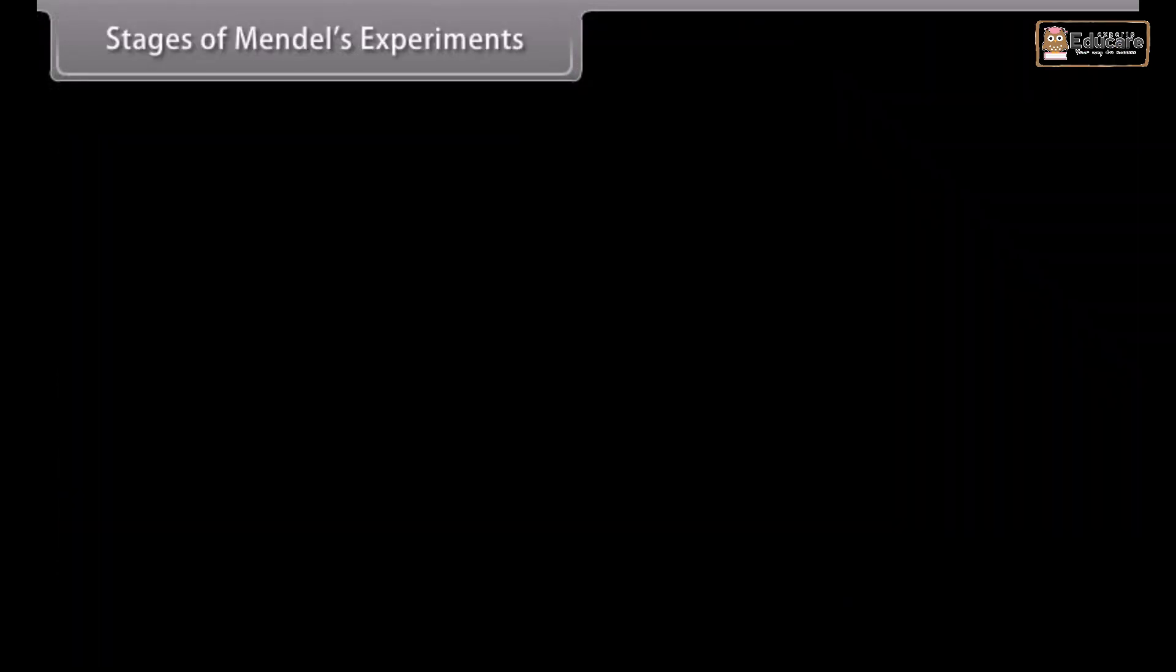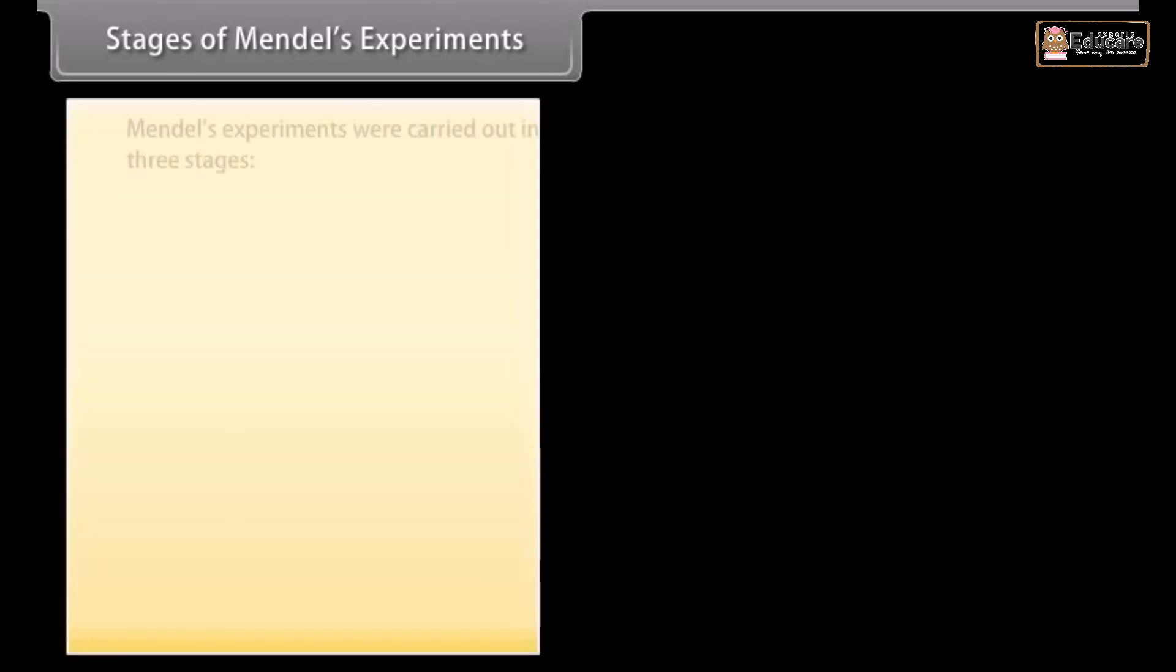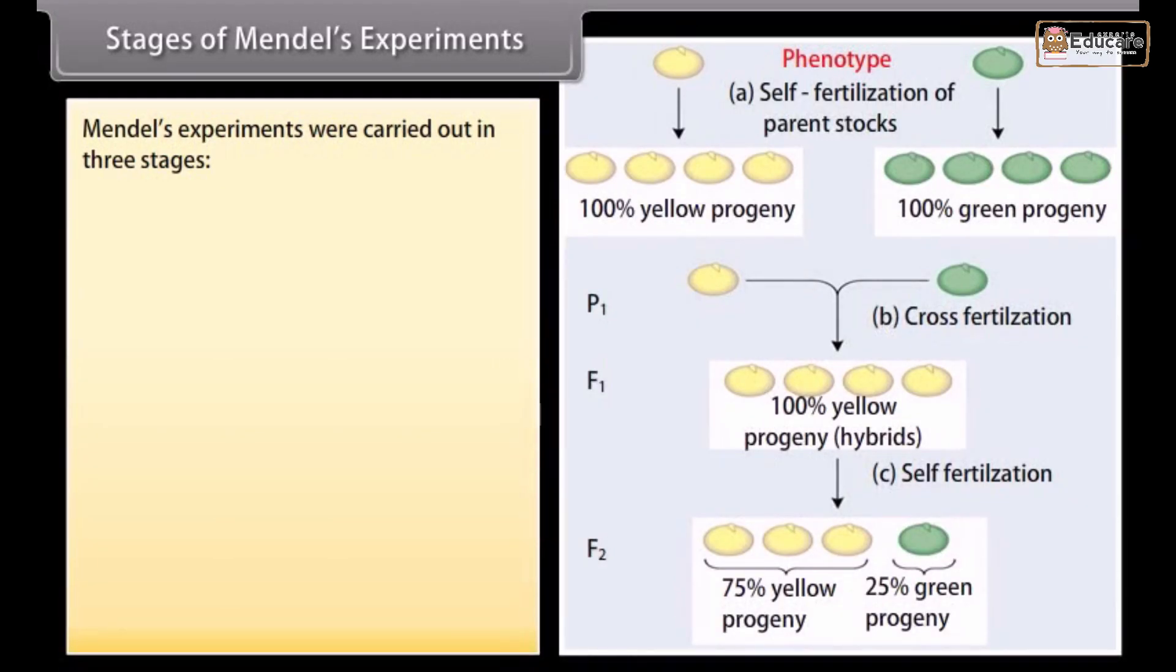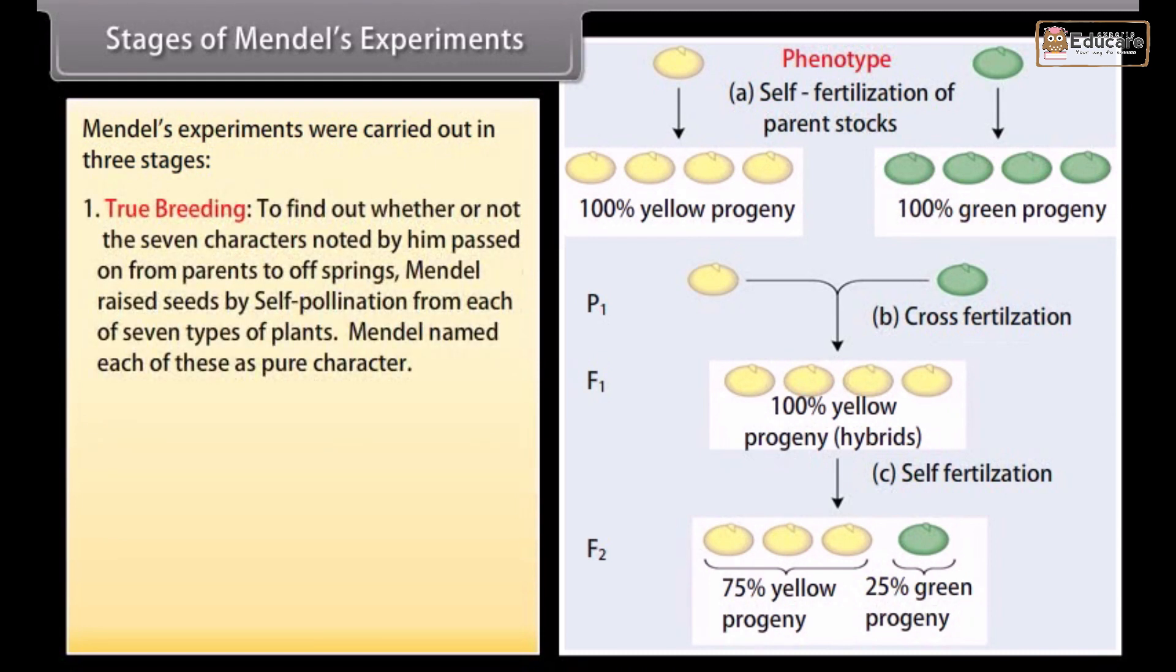Stages of Mendel's experiments. Mendel's experiments were carried out in three stages. True breeding: To find out whether or not the seven characters noted by him passed on from parents to offspring, Mendel raised seeds by self-pollination from each of seven types of plants. Mendel named each of these as pure character.